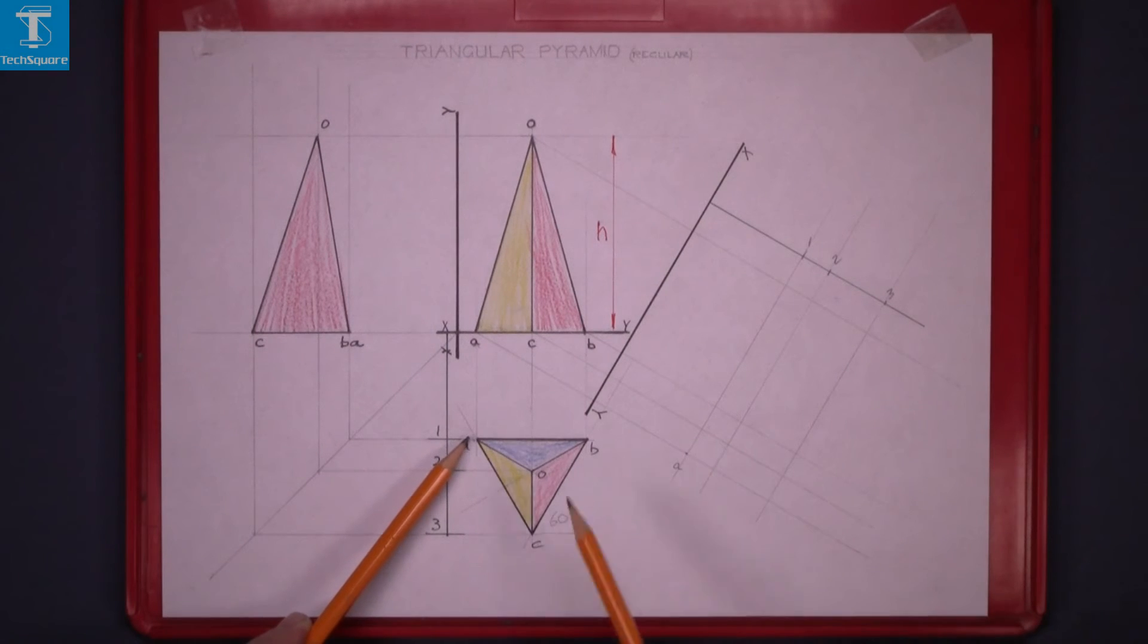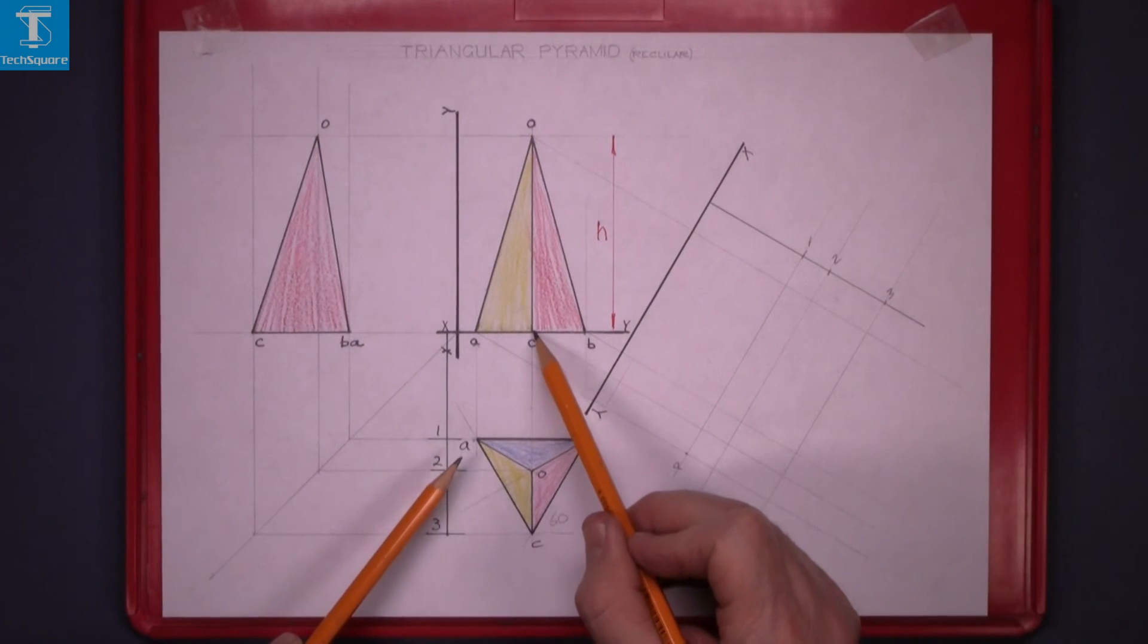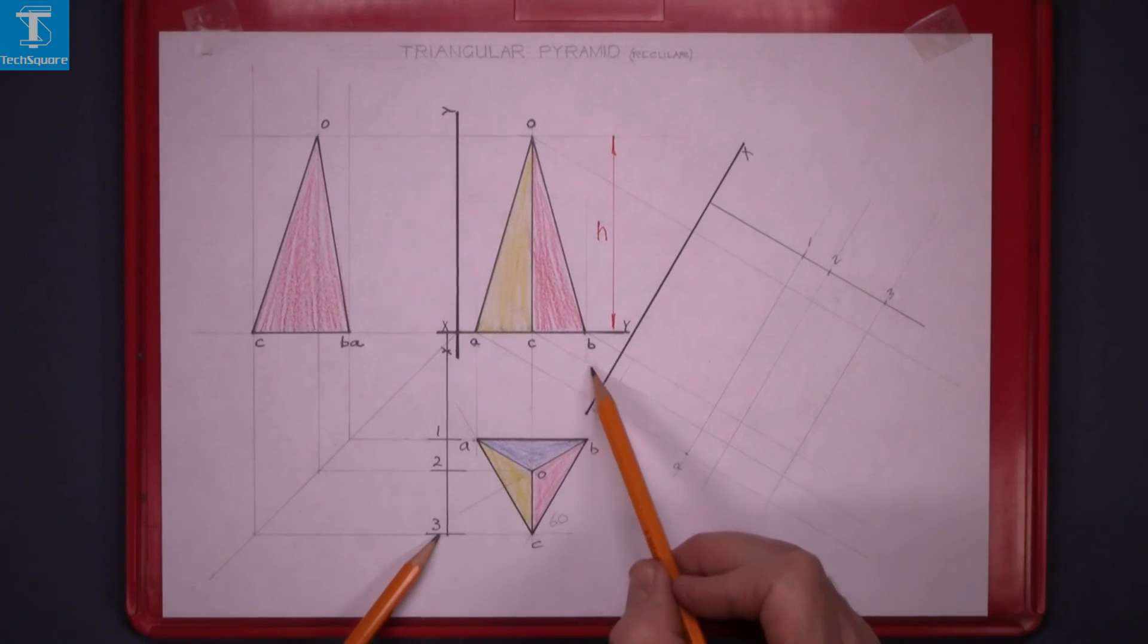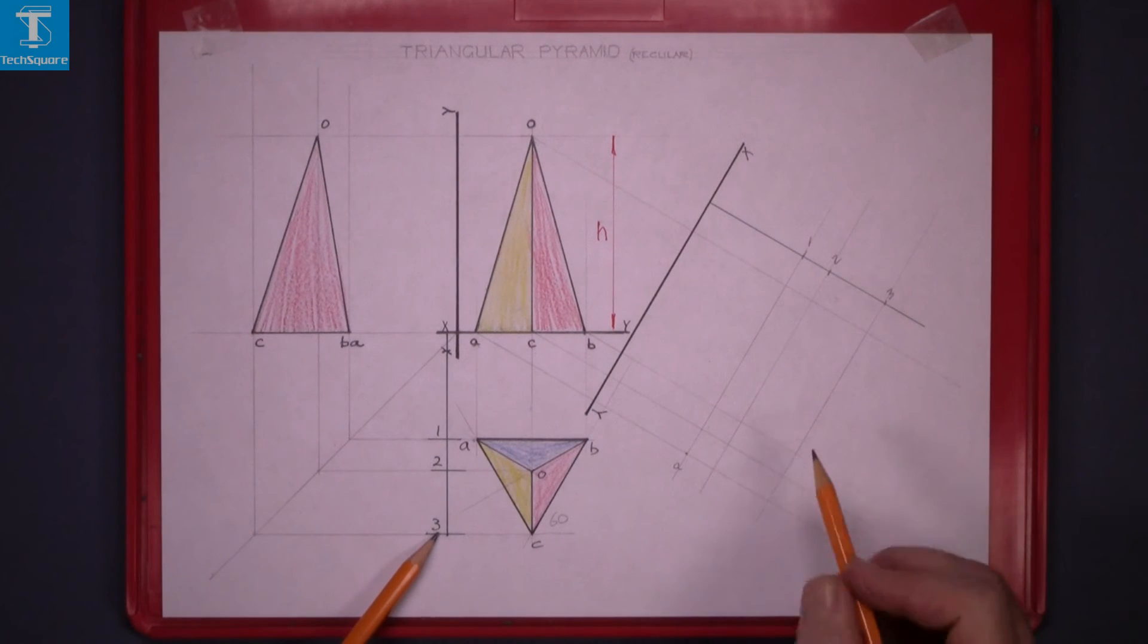Point C, C there. And in plan it's on line 3. So follow C down and out to line 3.